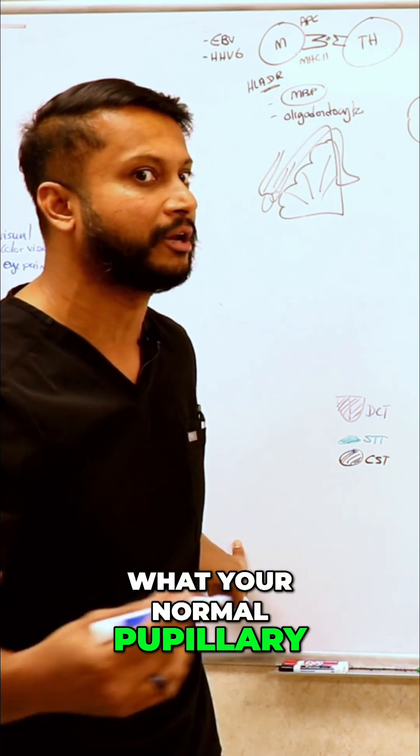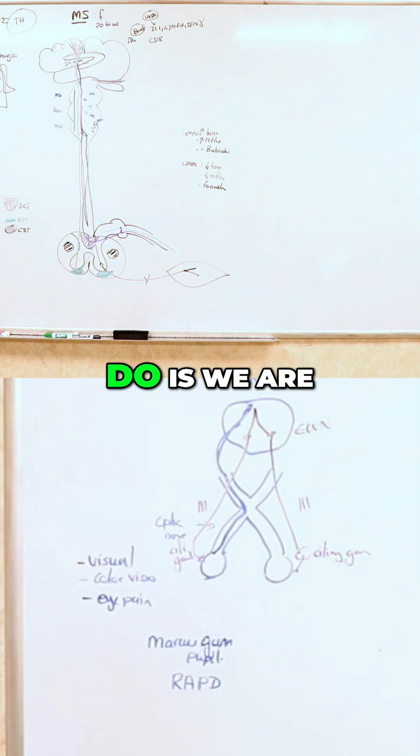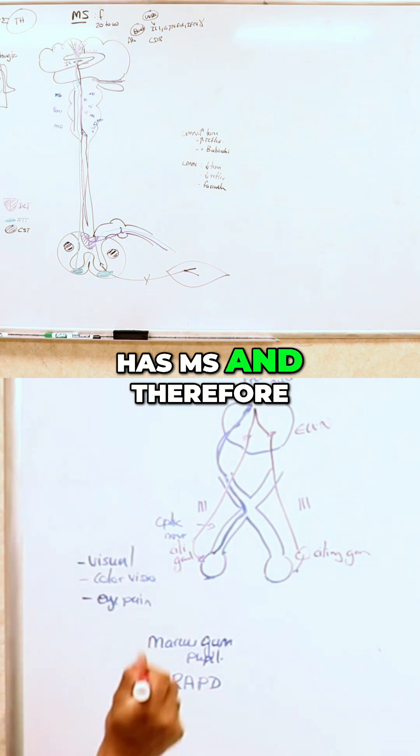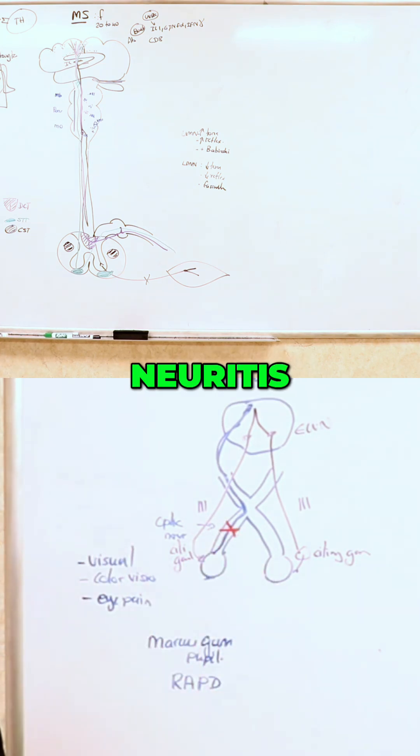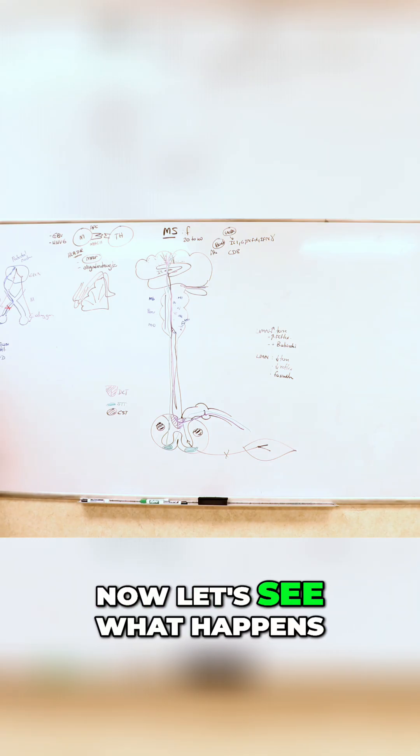In order to understand this, you need to know what your normal pupillary reflexes are. Now what we're going to do is say that this patient here has MS and therefore has optic neuritis—the optic nerve is inflamed. Let's see what happens.